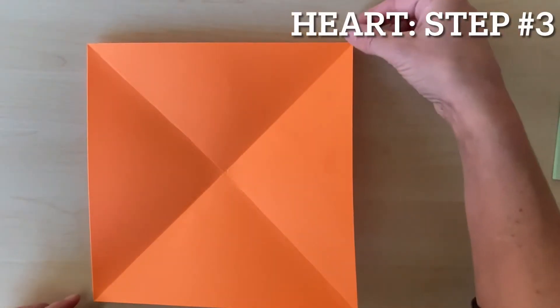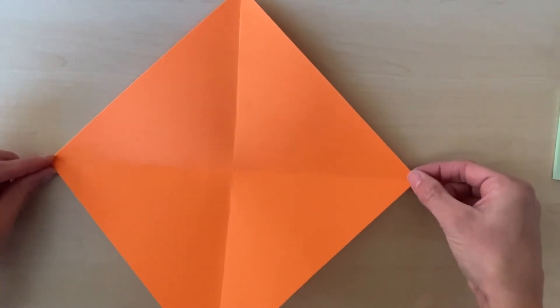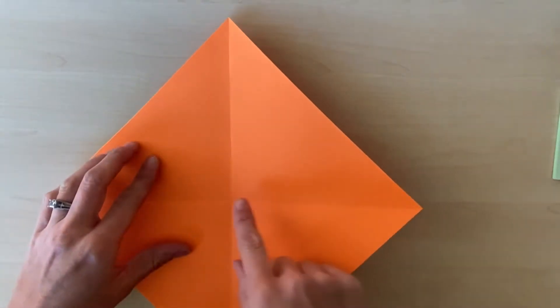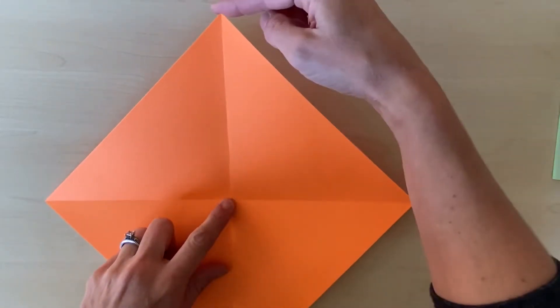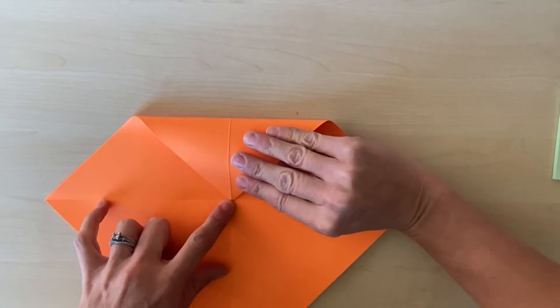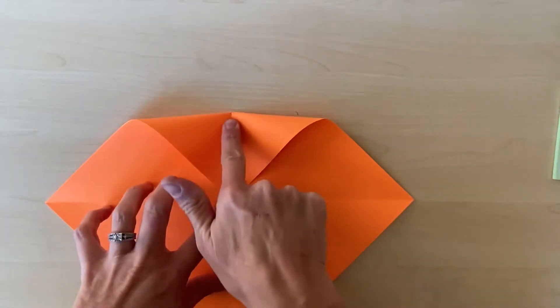Now I'm going to rotate the paper so it looks like a diamond shape. I'm going to take this top corner and meet it towards the middle. I'm going to hold with my finger and press towards the crease and deepen that crease.